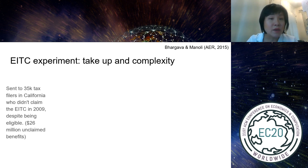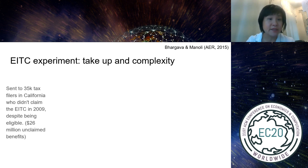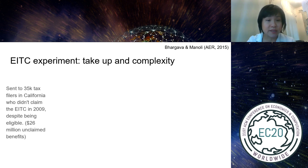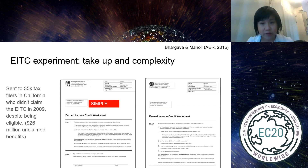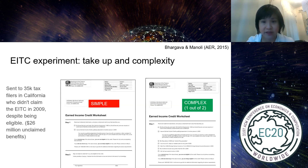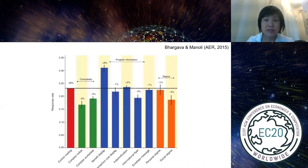Let's look at an EITC experiment where low-income tax filers can get money back. Forms were sent to 35,000 tax filers in California who didn't claim EITC despite being eligible — representing $26 million in unclaimed benefits. Tax filers received different versions: a simple form with two checkboxes on the left, and a more complex form with many checkboxes spanning two pages.